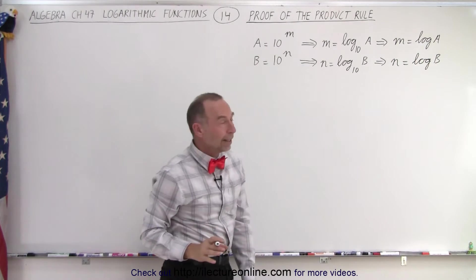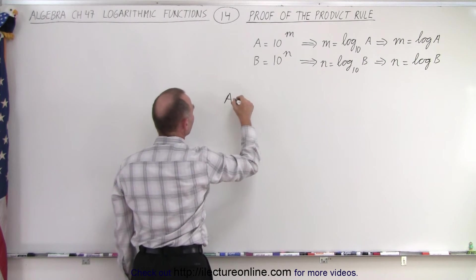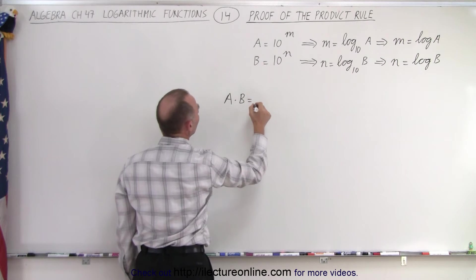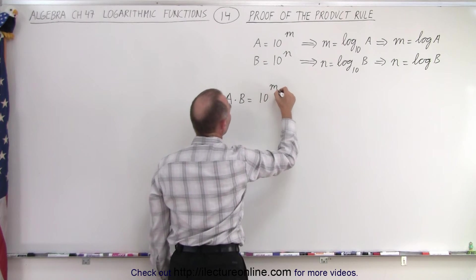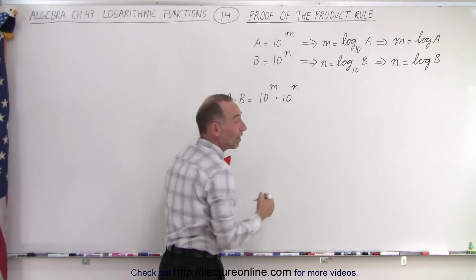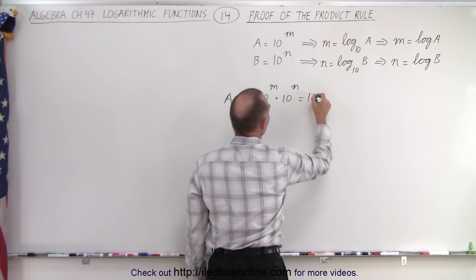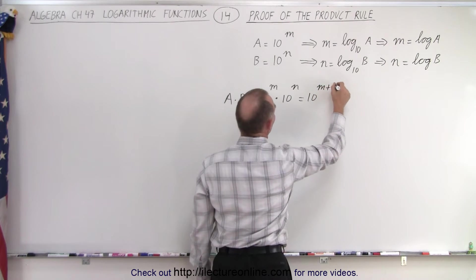All right, now let's take the product of A and B. So A times B, well that is equal to 10 to the m times 10 to the n. Now here the bases are the same, which means we can add the exponents. So this can be written as 10 to the m plus n.